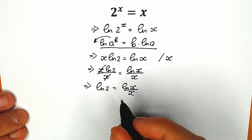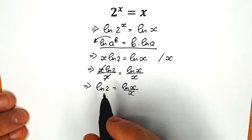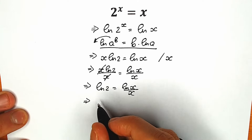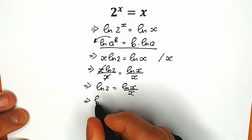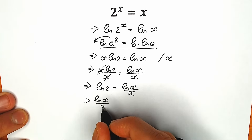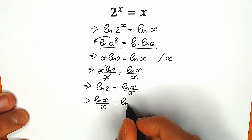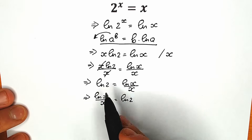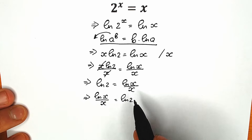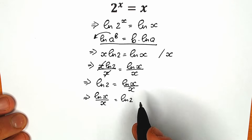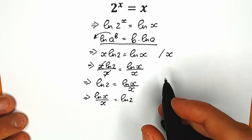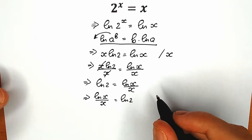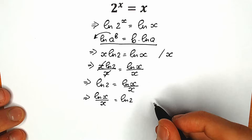I prefer variables on the left side, so we can swap positions. As a result we have natural log x over x equal to natural log 2 — variables on the left, constants on the right. Now we need to know about the Lambert W function.